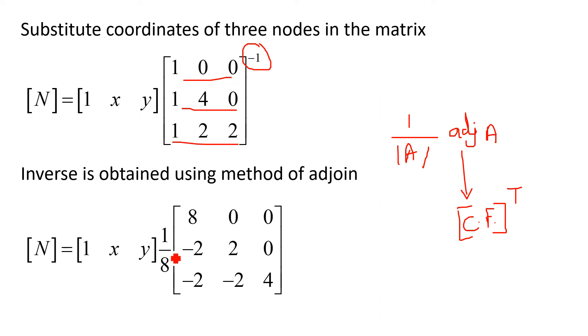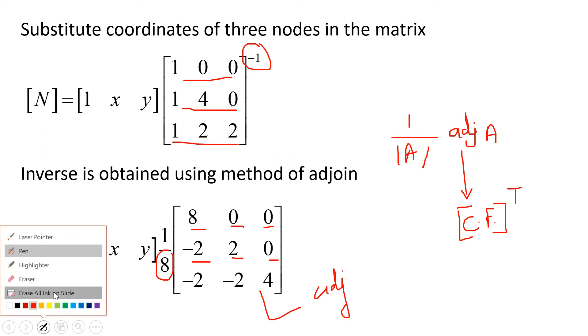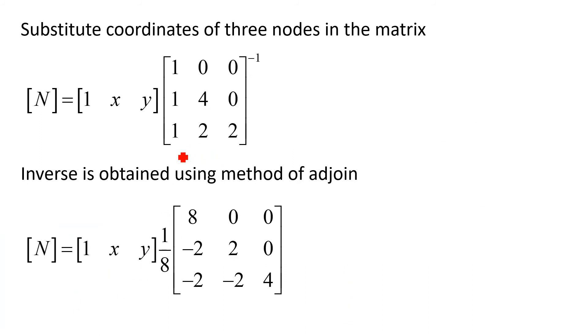Determinant value of this 3 by 3 matrix is 8, so it is 1 upon 8. These are the cofactors of various element, and then taking the transpose. This is nothing but adjoin matrix of the above 3 by 3 matrix. This is inverse of this 3 by 3 matrix: 1 upon 8 and this 3 by 3.